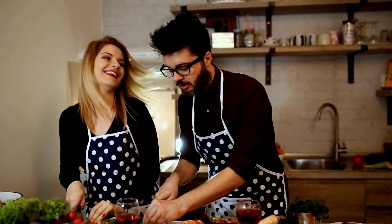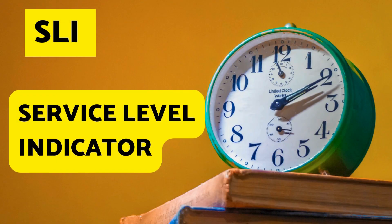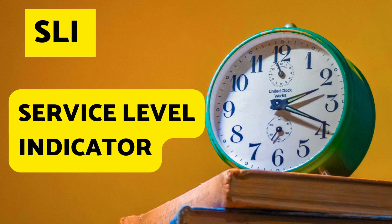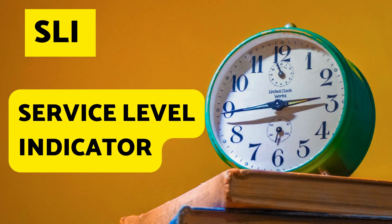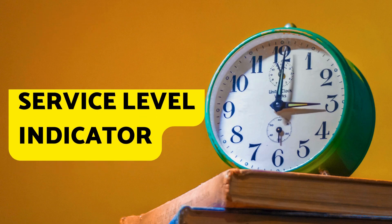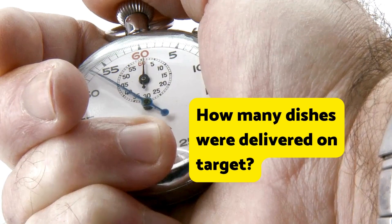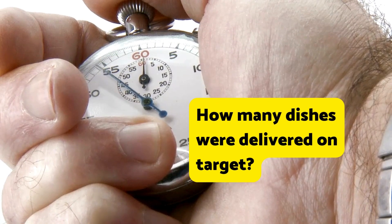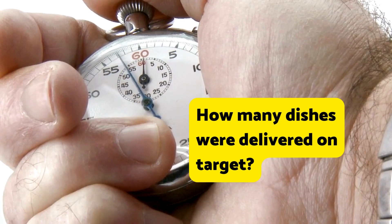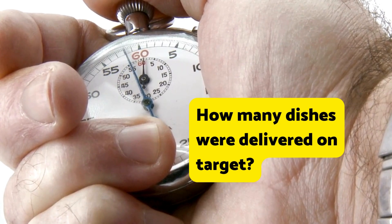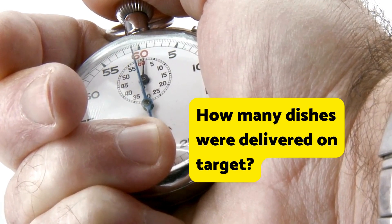The last but most important part is SLI, or Service Level Indicator — it's how you measure your performance. It's like checking how many dishes were actually prepared and delivered within the 20-minute target: what parameters are you measuring and how you are tracking them.